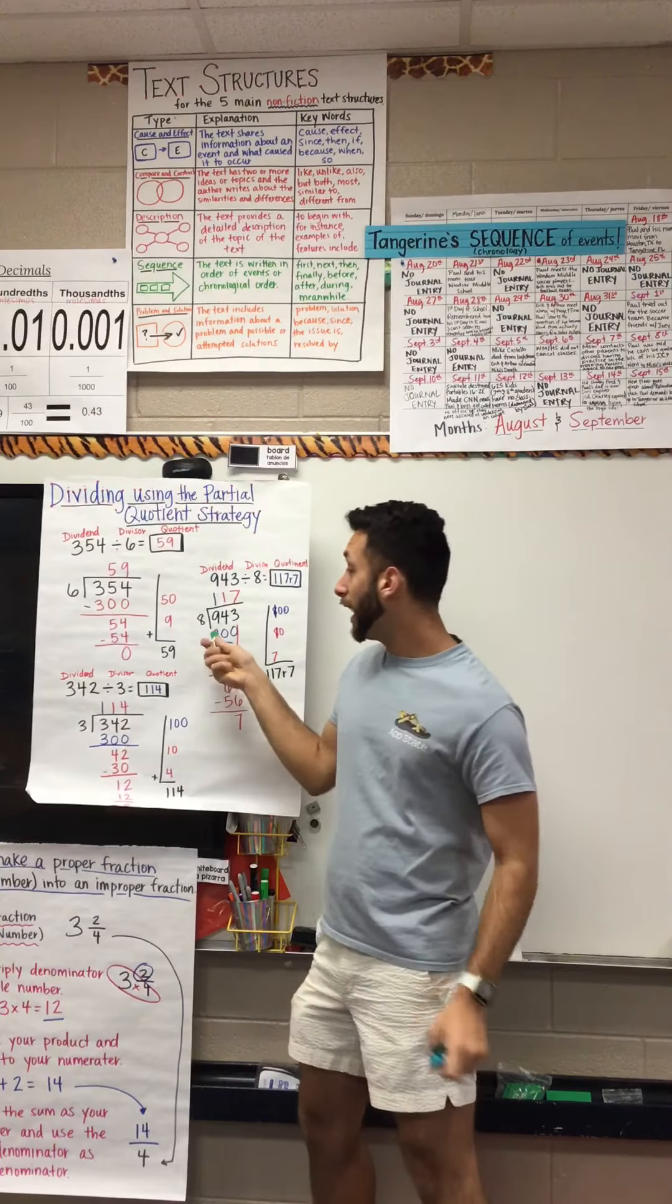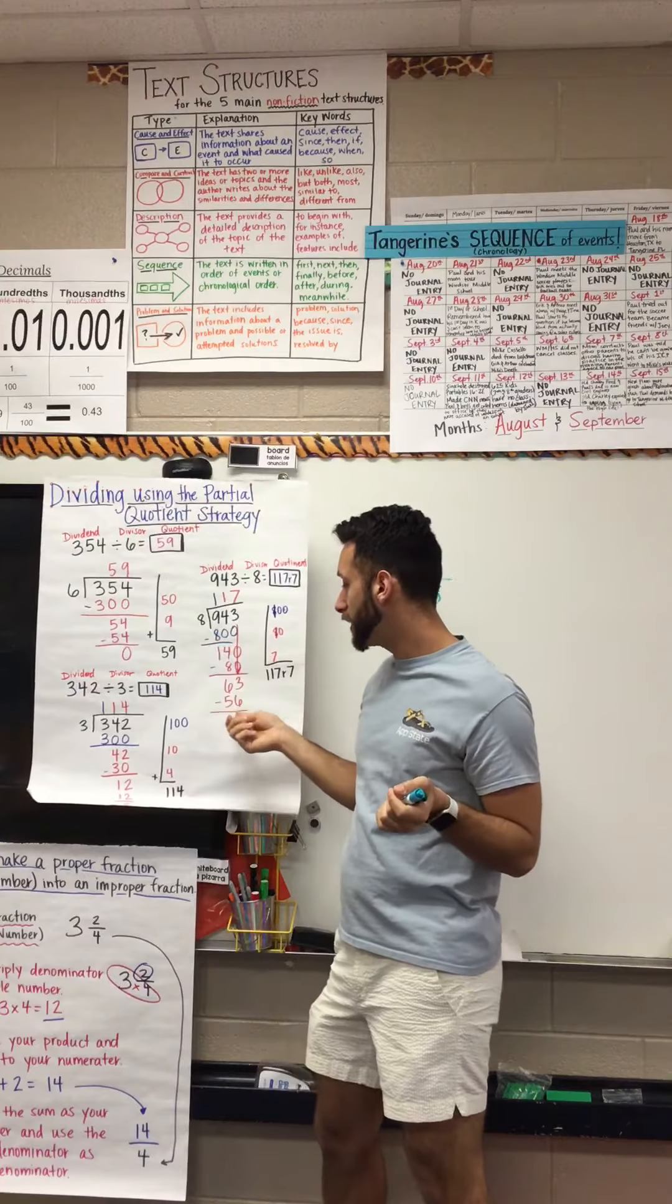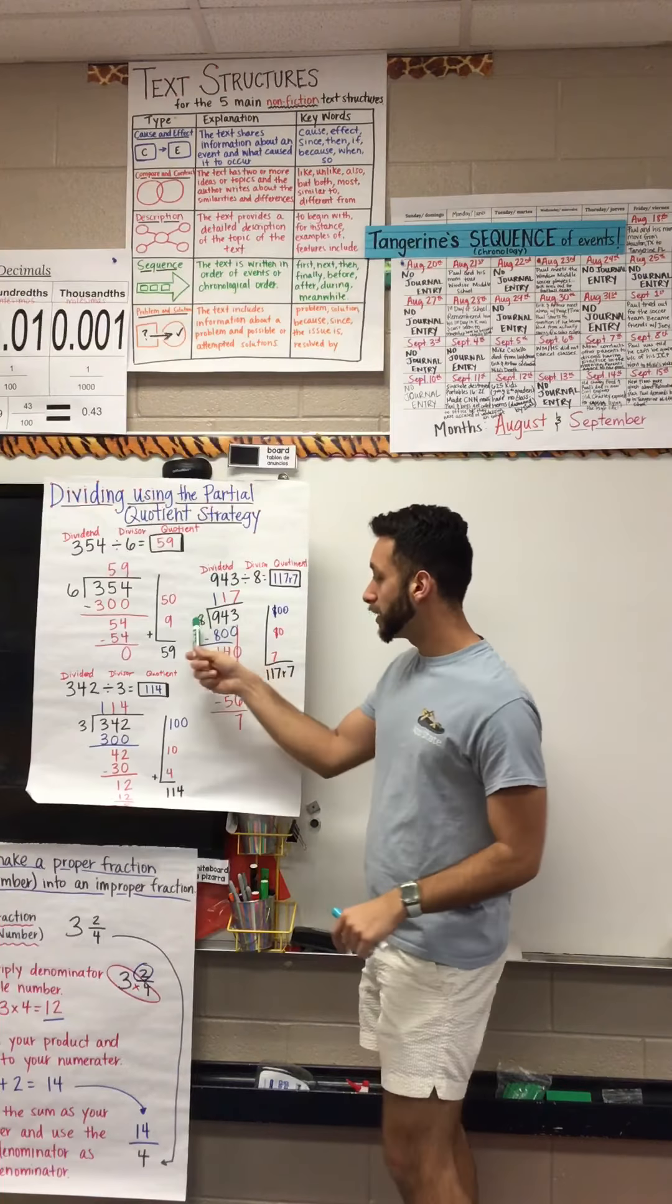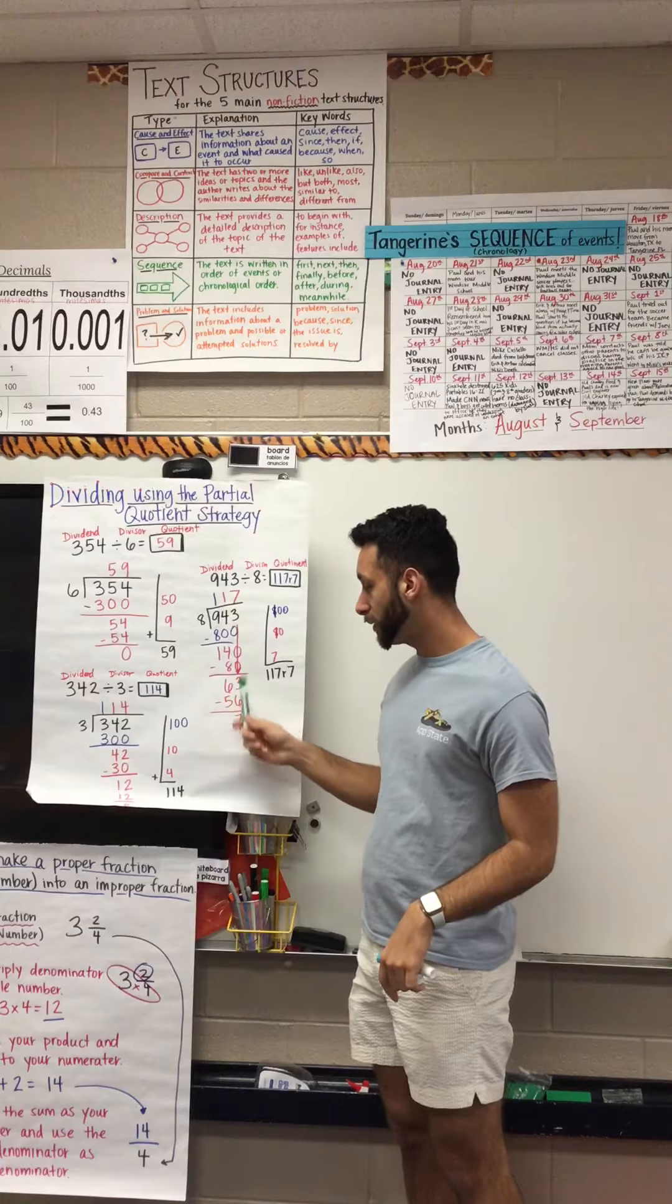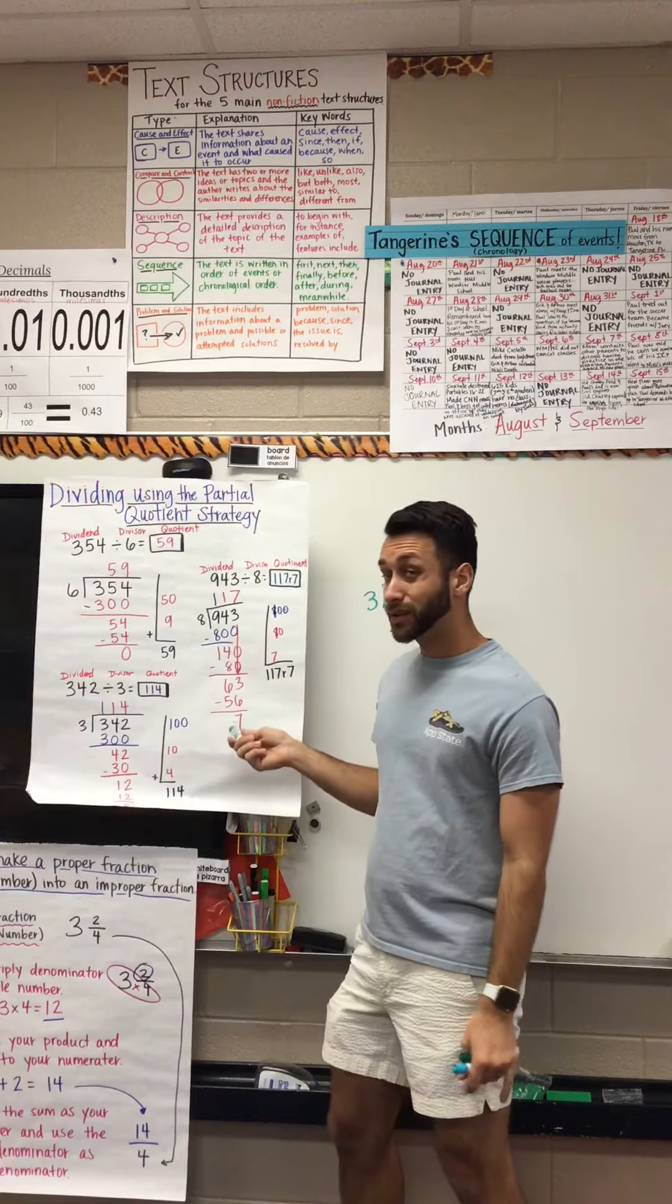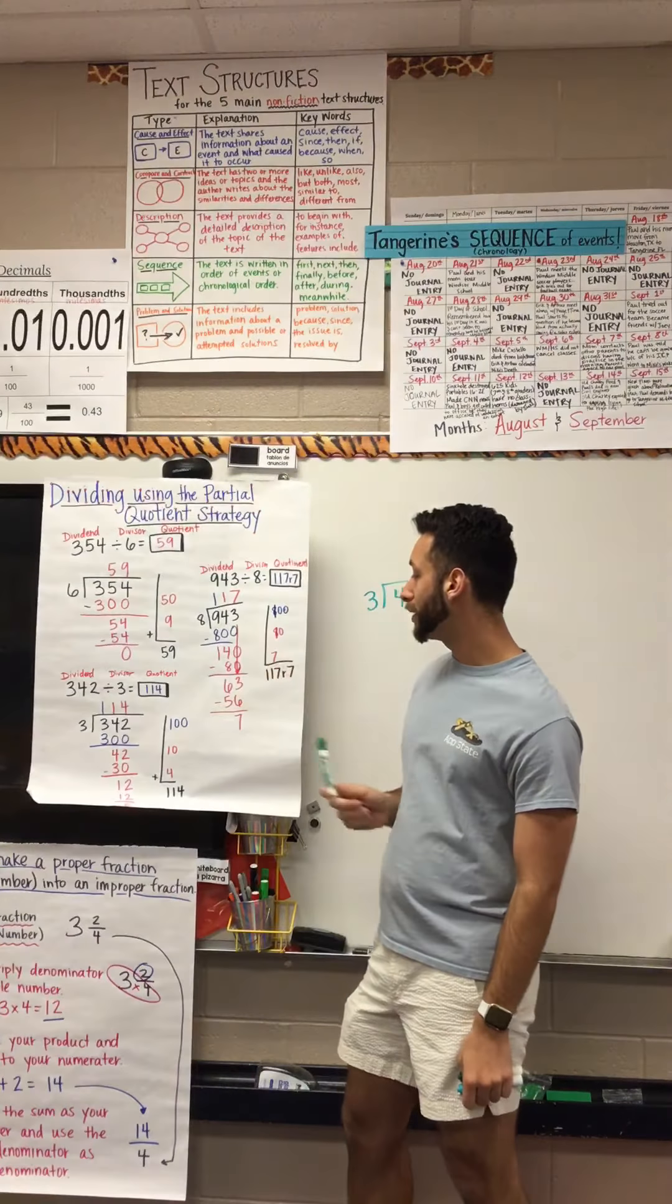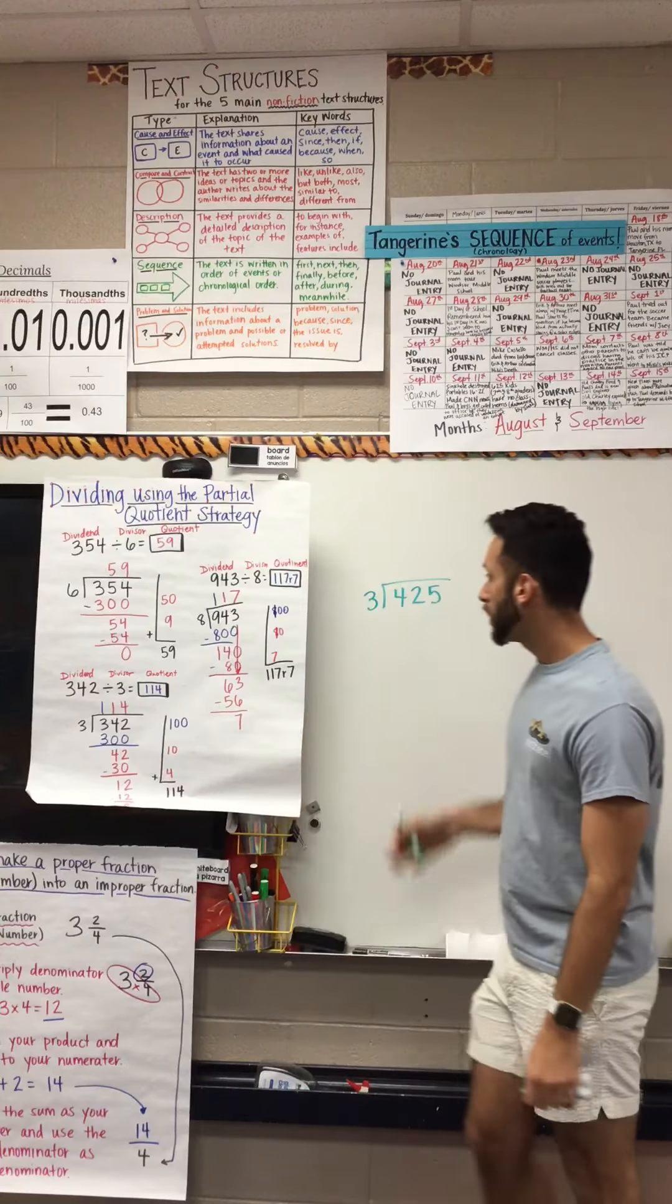Eight goes into 63 seven times. Seven times eight is 56. That's the closest you can get to 63 without going past it. You subtract 63 from 56 and you get 7. After you get to your ones and there's still not a zero remaining, that means this number down here is your remainder. So that's why it's 117 with a remainder of 7. I wrote this word problem over here that I'll quickly demonstrate for you to have a better visual.